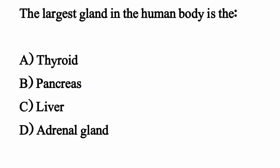The largest gland in the human body is — option D. The correct option is option C: Liver.